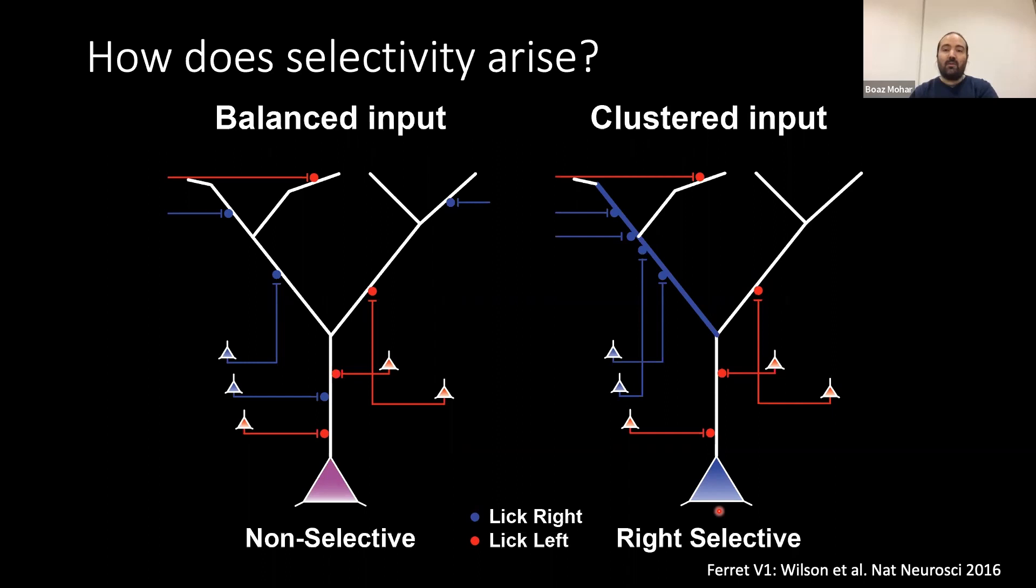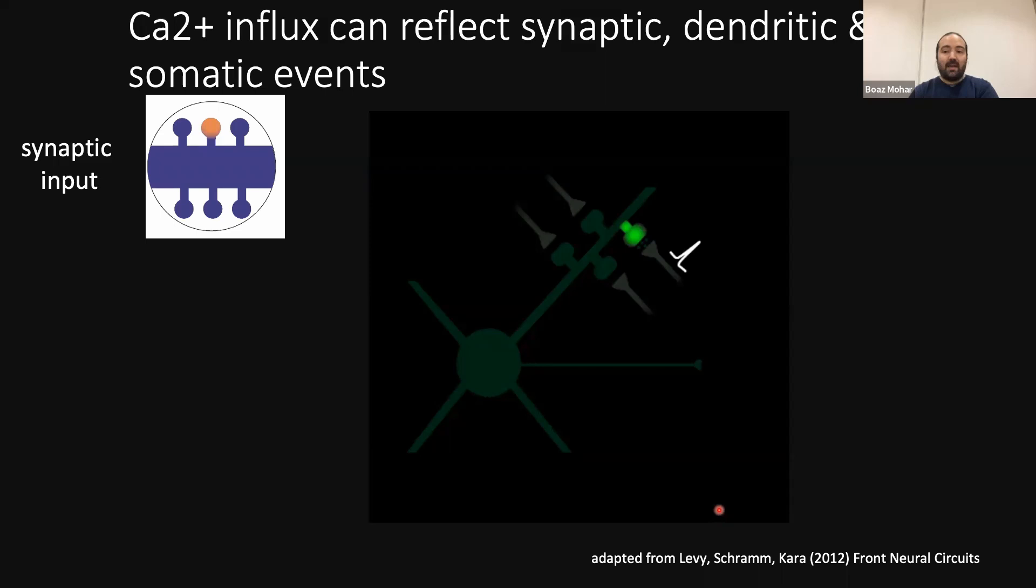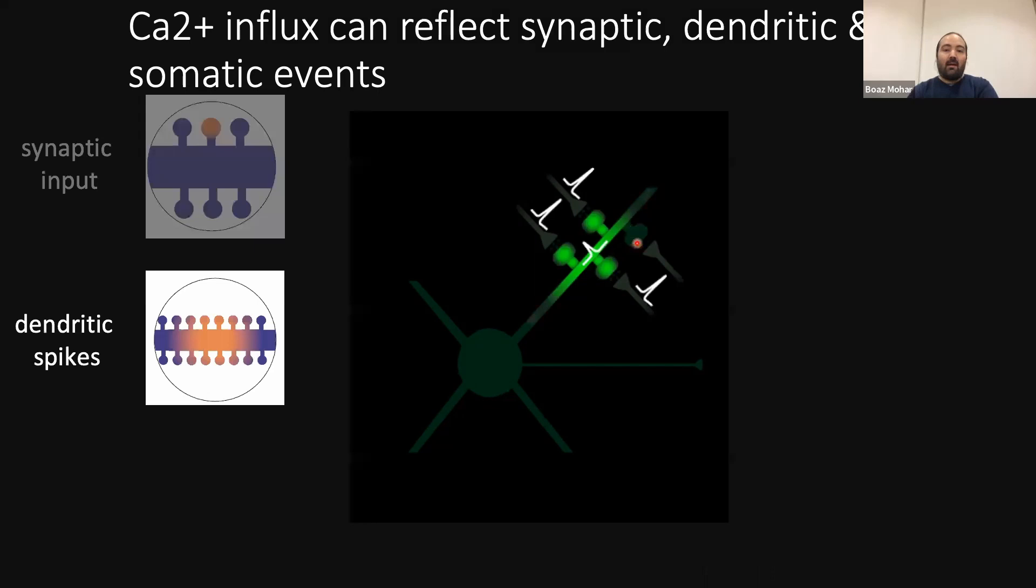But one way of getting selectivity is if we receive biased input. So that means that most input of a right-selective cell comes from right-selective neurons through their axons. There's another alternative hypothesis, that we have organization of input that causes clustering. And here we see a demonstration of clustering that forces this cell to have right selectivity. And so the number of right and left selective inputs is the same, but summation is now no longer simple. Because these inputs are clustered, they affect the output of the cell more. And so in order to test this hypothesis in frontal cortex in an animal engaged in a behavioral task, we're going to use fast calcium imaging.